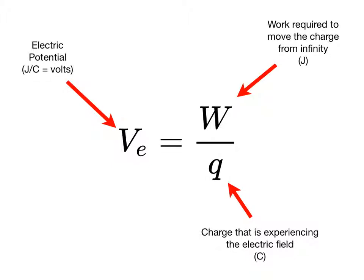If we're moving the charge along the direction of the electric field, then the work will be negative. If we're moving the charge against the field, then the work will be positive.